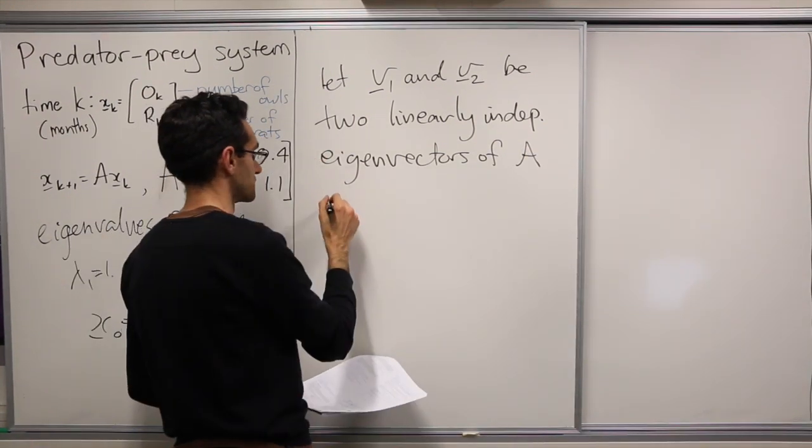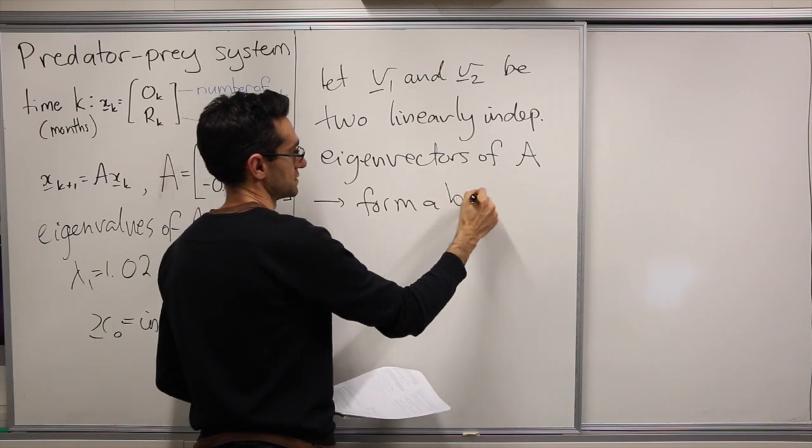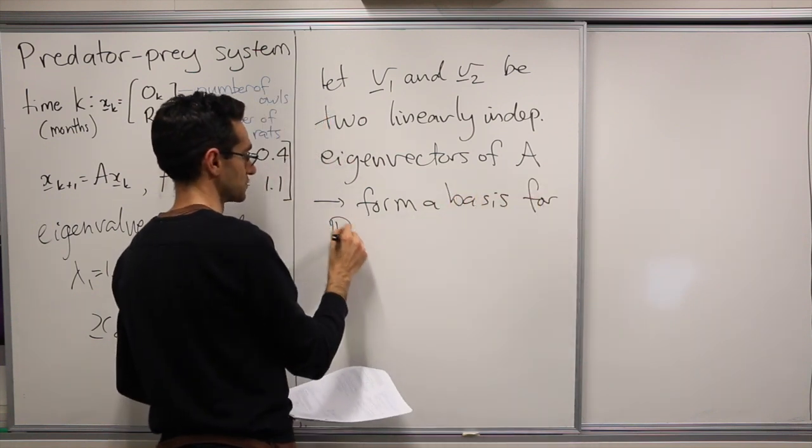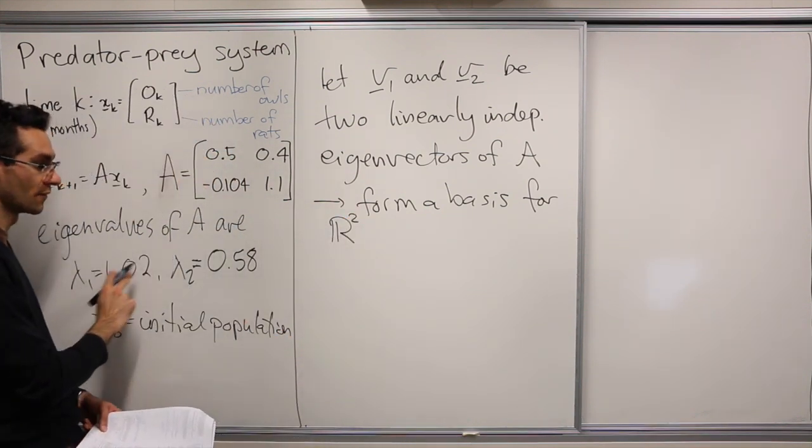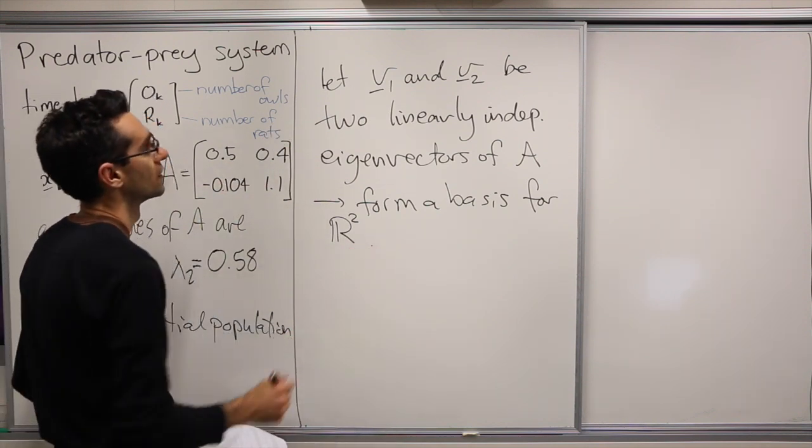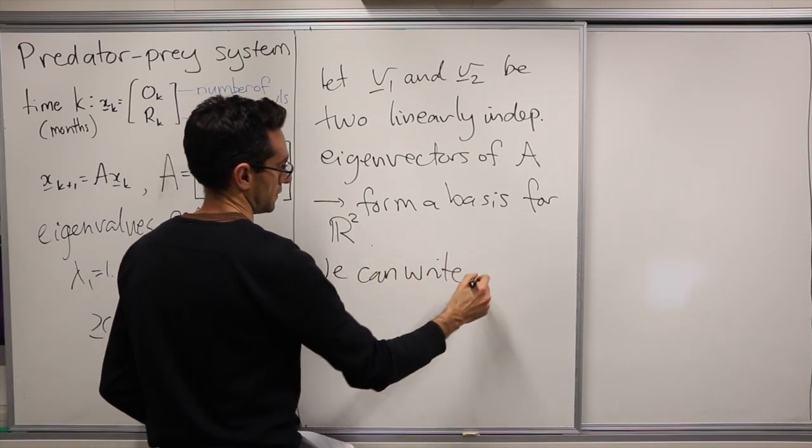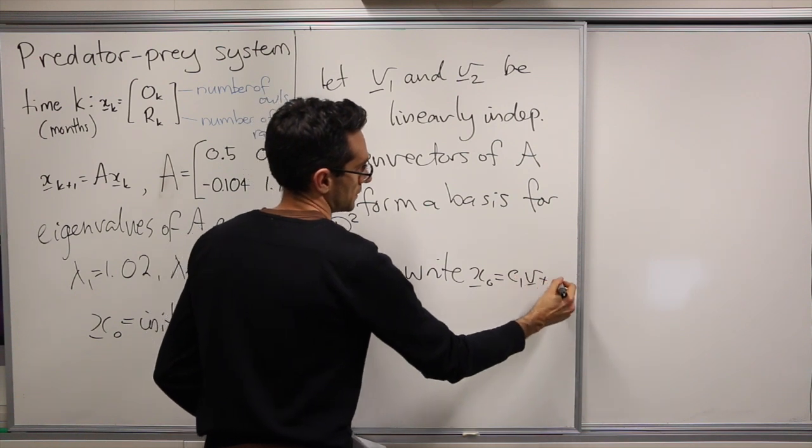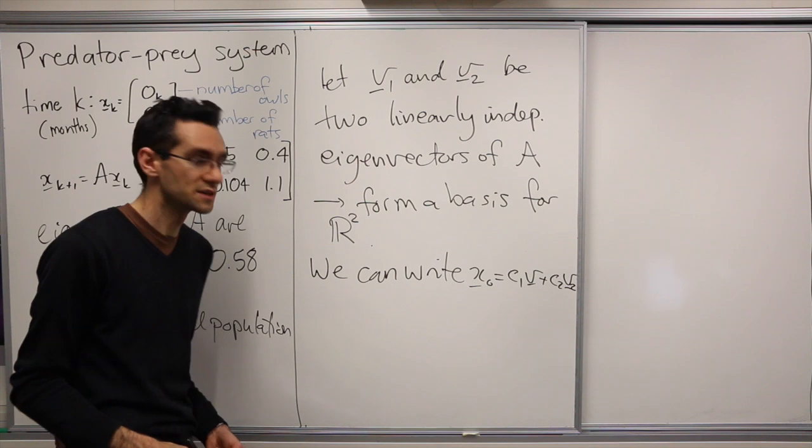And so they form a basis for R². We have that v1 has eigenvalue lambda 1 and v2 has eigenvalue lambda 2. So we can write x0 as c1·v1 + c2·v2 for some real numbers c1 and c2.